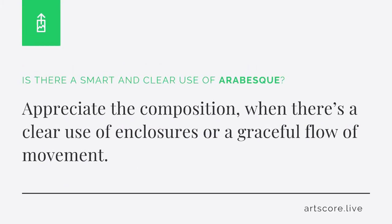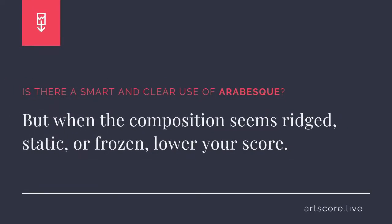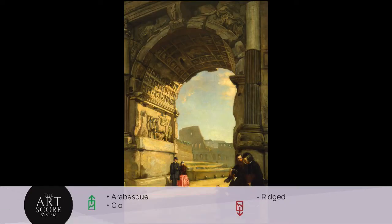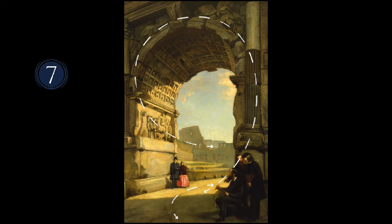Arabesque. Is there a smart and clear use of arabesques? Appreciate the composition when there's a clear use of enclosures or a graceful flow of movement. But when the composition seems rigid, static, or frozen, lower your score. I scored the artwork a 7. I see the movements gracefully and intelligently supporting the story. What's your score?